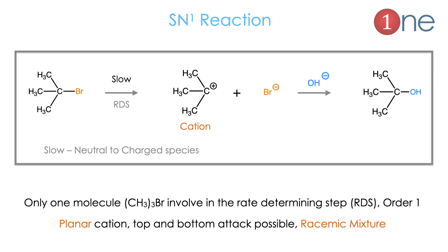SN1 reaction is a two-step reaction where alkyl bromide is converted into a cation, then OH⁻ attacks to form alcohol. It is SN1 because the cation formation involves only one molecule, which is the slow step. It is slow because the neutral molecule is converted into a charged cation. Importantly, the cation is planar, so top and bottom attack is possible, and the product is always a racemic mixture.